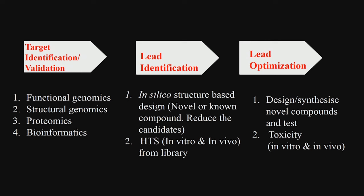You may test millions of compounds — that is the in silico structure-based design. You take millions of compounds and dock them: docking means you try to see whether the compound binds to the active site of the target, how it binds, and whether the binding is very good. That is the in silico approach. You can also do an in vitro approach: take thousands of compounds, test them on that particular protein, and see which compounds have very high inhibitory activity — that is the in vitro approach.